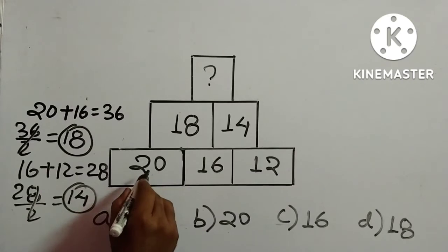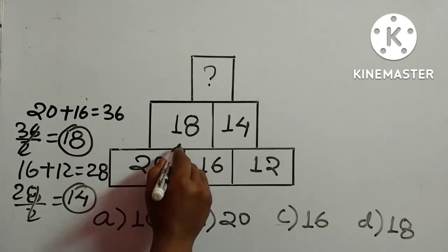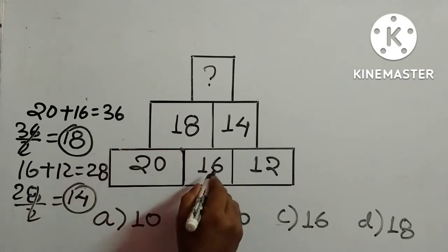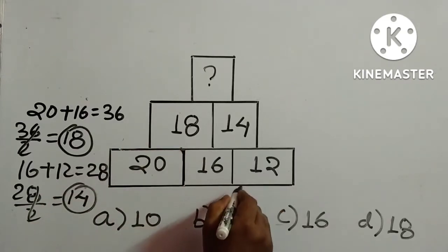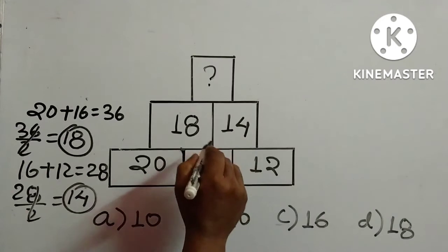That means add these two and divide it by 2, you are getting the result over here. Again, add these two, divide by 2, you are getting the result over here.